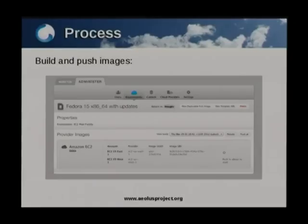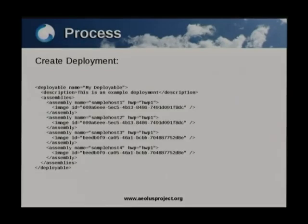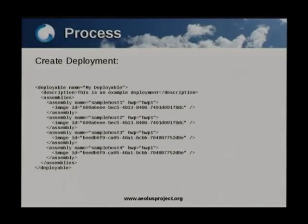Then you build and push your template — you build it into an image and push it out to your cloud provider. This is the UI for the build and push part for your images. Then you can create a deployment. A deployment is essentially several instances together working as an application. You might define a simple web host and database server pair. This is an example deployment file which contains four instances based upon two images — the first two are based on the first image and the last two are based on the second image.